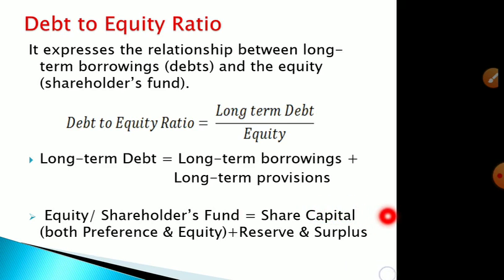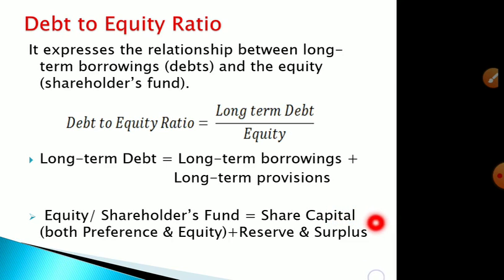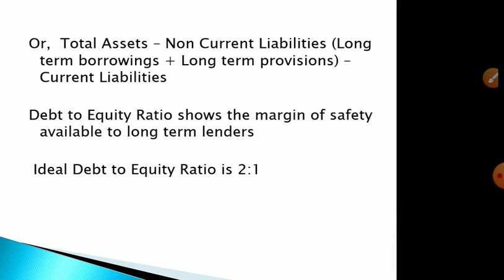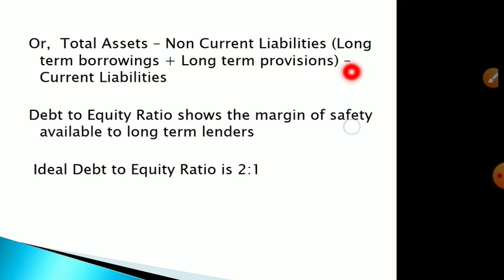In the balance sheet, under liabilities, the first item is share capital — that is shareholders' fund — which includes share capital and reserve and surplus. There is another formula for finding shareholders' fund: total assets (fixed assets plus current assets) minus non-current liabilities (long-term borrowings and long-term provisions) minus current liabilities gives us the shareholders' fund. This formula is derived from the balance sheet.